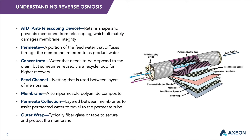Membrane elements contain from 1 to more than 30 membrane leaves depending on the element diameter and element type. Each leaf is made of two membrane sheets glued together back-to-back, with a permeate spacer between them. A semi-automated process produces consistent glue lines of about 1.5 inches or 4 centimeters wide that seal the inner permeate side of the leaf against the outer feed concentrate side. There is a side glue line at the feed end and at the concentrate end of the element, and a closing glue line at the outer diameter of the element. The open side of the leaf is connected to and sealed against the perforated central part of the water tube, which collects the permeate from all leaves. The leaves are rolled up with a sheet of feed spacer between each of them, which provides the channel for the feed and concentrate flow.